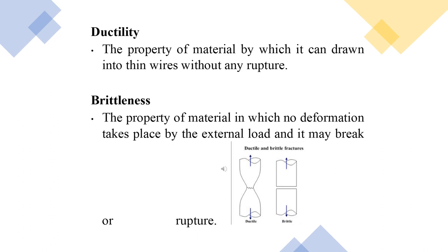Brittleness is the property of a material in which no significant deformation takes place under external load — it simply breaks or ruptures directly. A good example is glass, which under force breaks down directly without deformation.